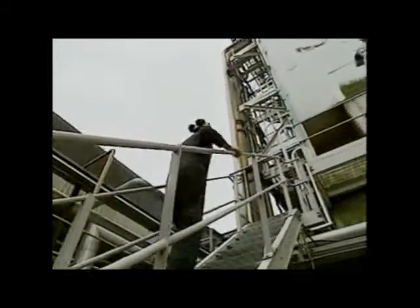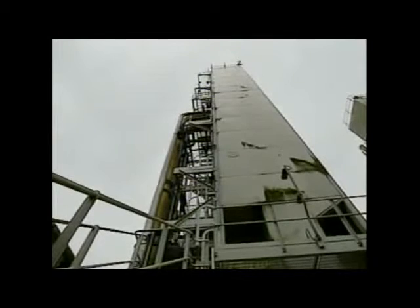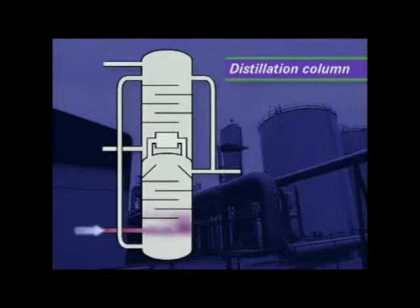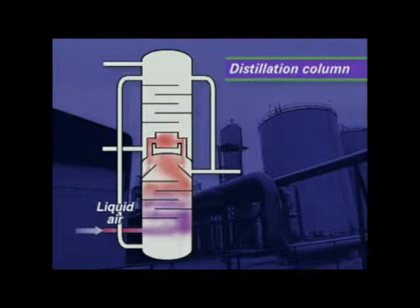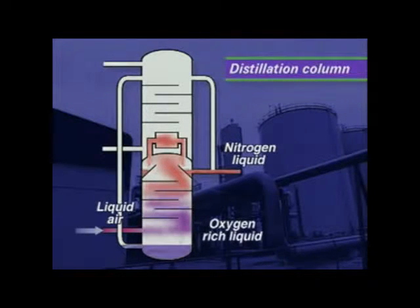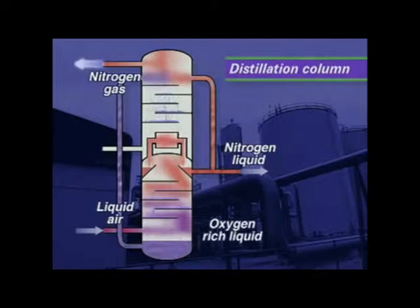This tall fractional distillation column is in fact two columns, with a low-pressure unit sitting on top of a high-pressure one. The double column works like this: air enters the high-pressure column as a liquid. Nitrogen boils off and rises as a gas to the top of the column where it's condensed. A liquid rich in oxygen condenses at the bottom of the column. The oxygen-rich liquid is then fed to the low-pressure column, where any nitrogen boils off and almost pure liquid oxygen condenses.